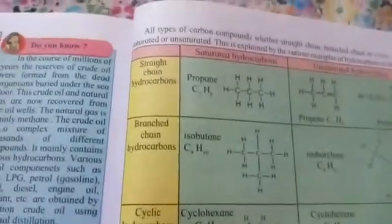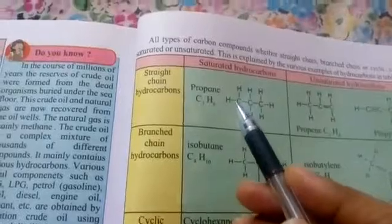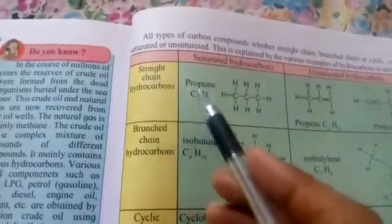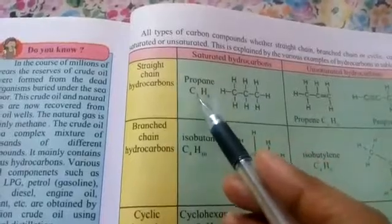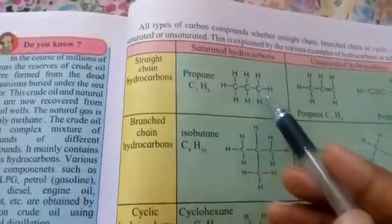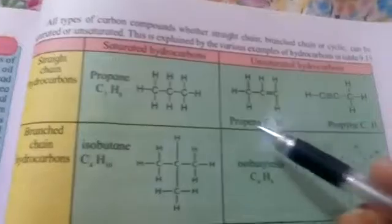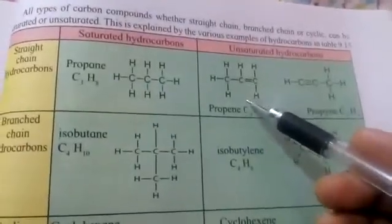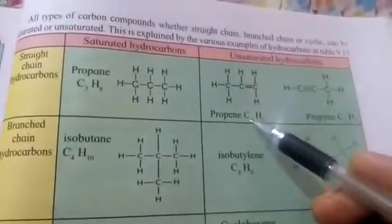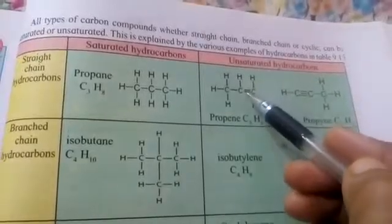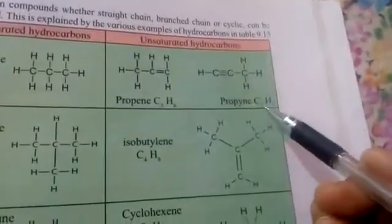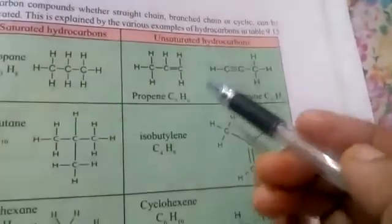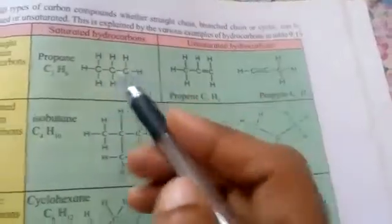Saturated hydrocarbons are the alkanes. For example, propane is a saturated hydrocarbon with molecular formula C3H8, shown with its structural formula. Propene is an unsaturated hydrocarbon with molecular formula C3H6 and a double bond. Propyne has a triple bond and molecular formula C3H4.